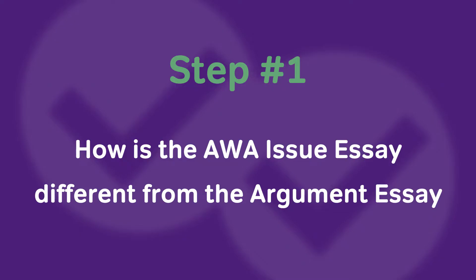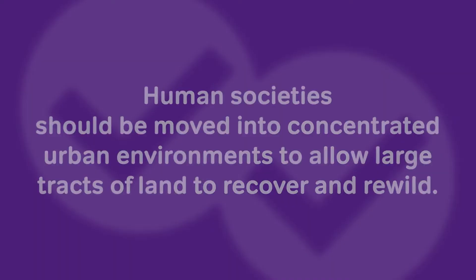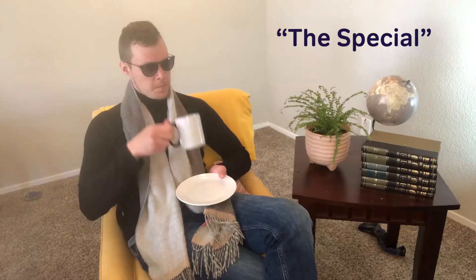Step number one: get clear on what the issue essay is and how it's different from the argument essay. I highly recommend checking out our video on the AWA argument essay, but let me give you the highlights. In the AWA argument essay, we're asked to critically evaluate a short argument, identify the flaws, and then write an essay about them. The AWA issue essay works just a little bit differently. Instead of being given an argument, we actually have to create an argument responding to a particular issue.